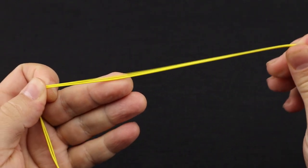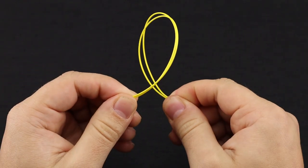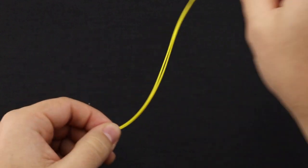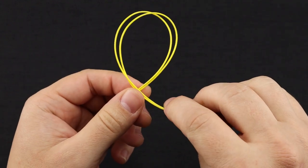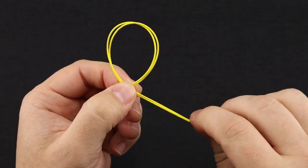Now what you're going to be doing is making a loop with both lines together. And you can go under, or you can go over, whatever way you prefer. I'll go over here.